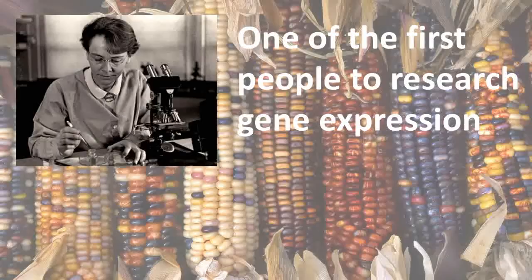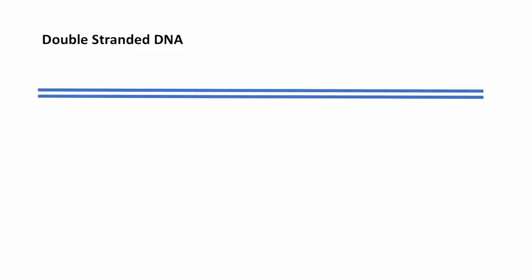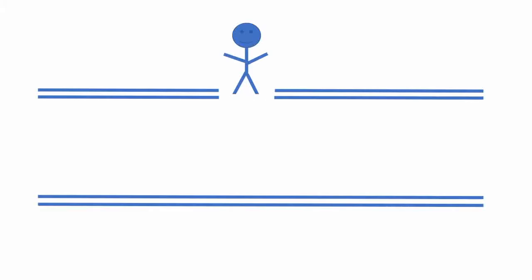Transposons are sometimes called jumping genes because a segment of DNA is cut and moves to another segment. When I think of jumping genes, this is more what goes through my head. I picture a little DNA man who just jumps out of the DNA and then lands in his new segment. What is actually going on is more along the lines of this.